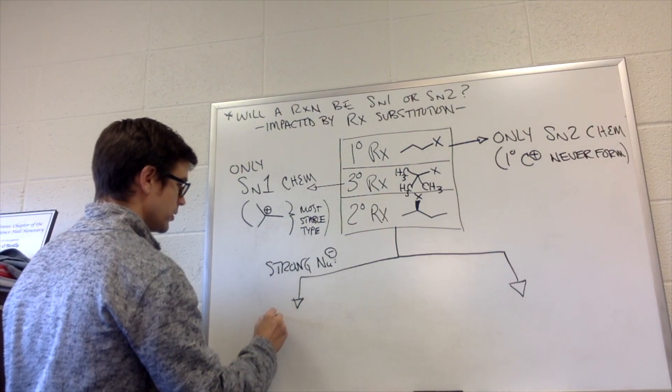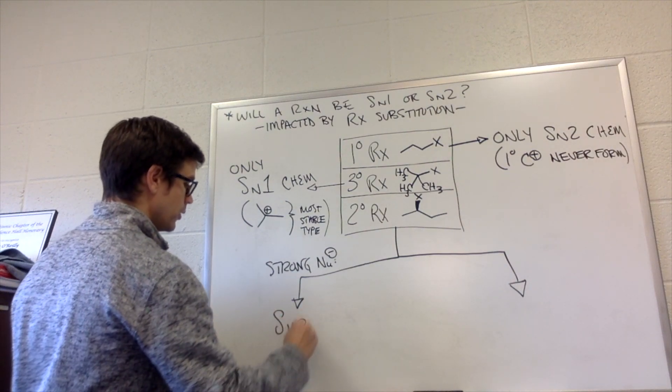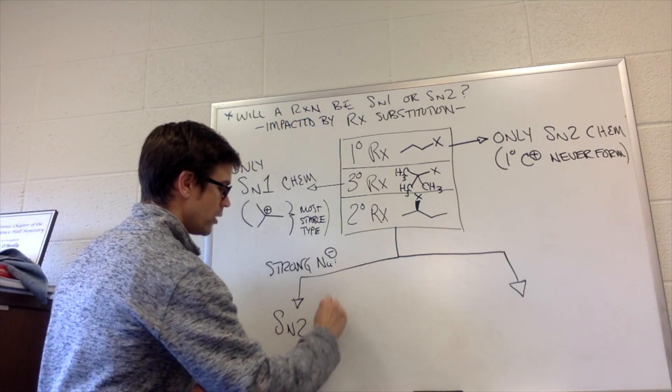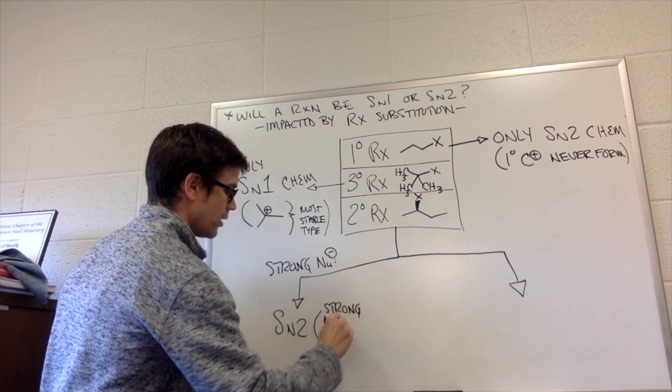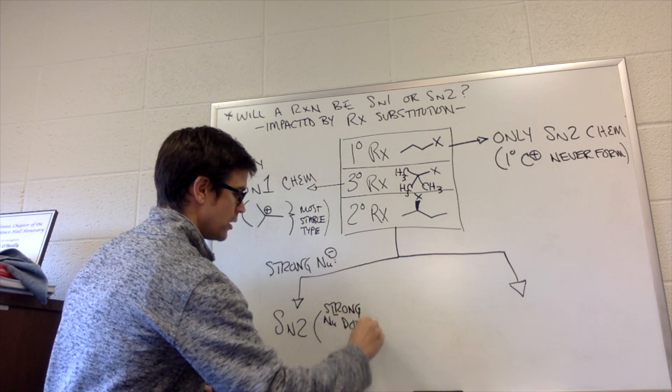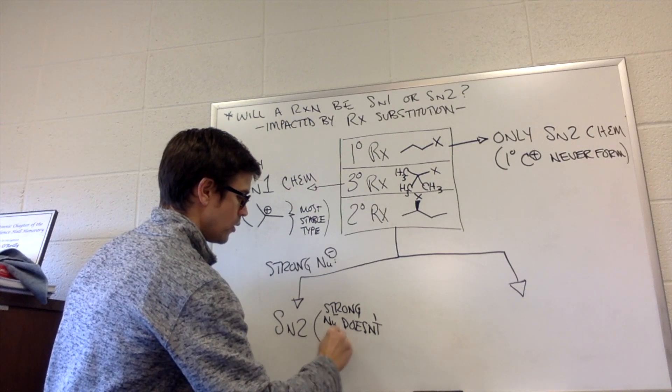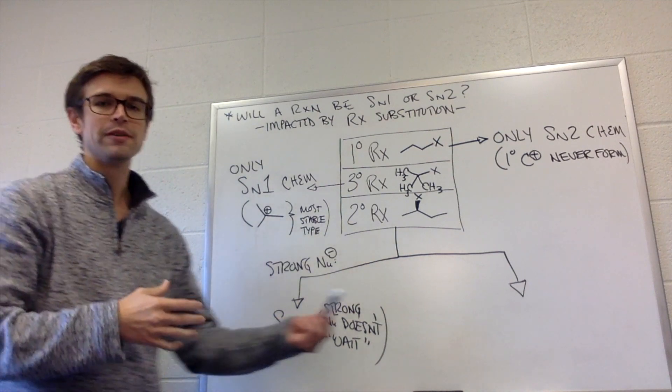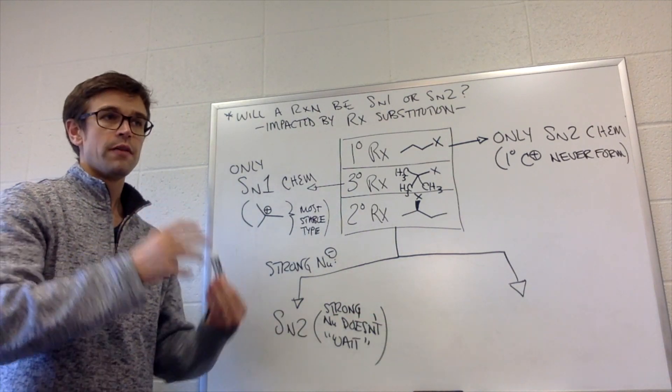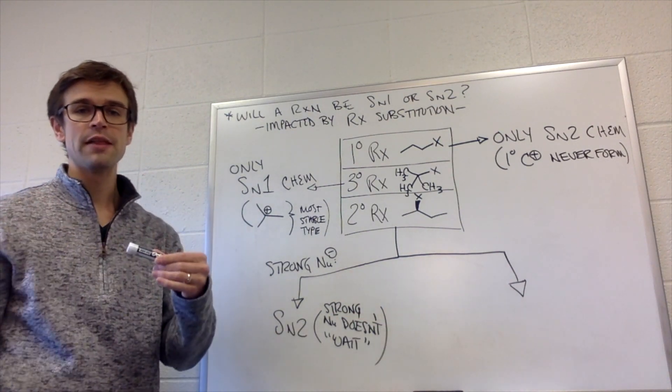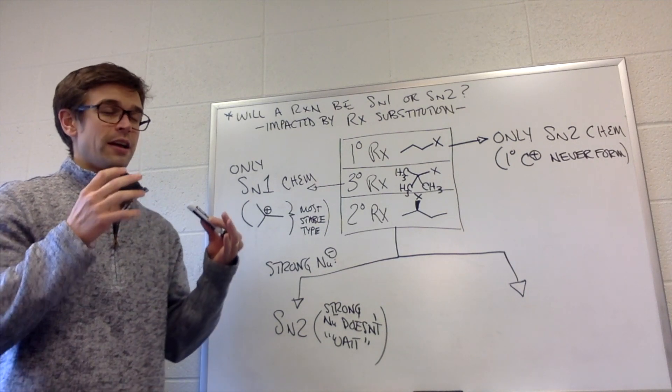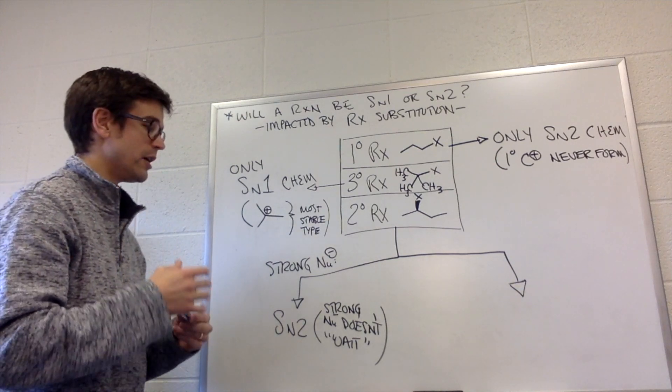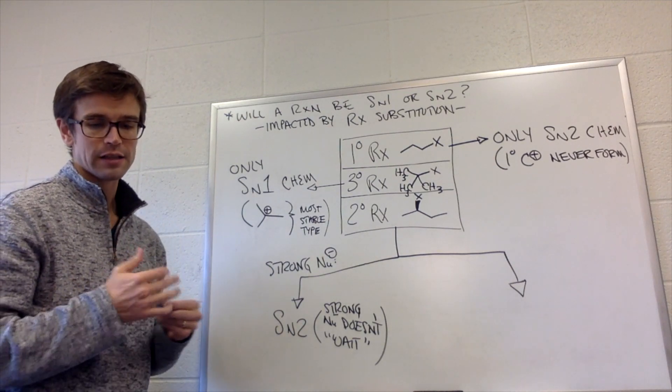So a strong nucleophile is going to do SN2 because the nucleophile, and we'll put strong nucleophile, doesn't wait. What do we mean by wait? We mean that what happens in an SN1 reaction, the carbocation forms, then the nucleophile attacks. So if a strong nucleophile doesn't wait, it doesn't wait for that carbocation to form. It immediately reacts by an SN2 reaction.